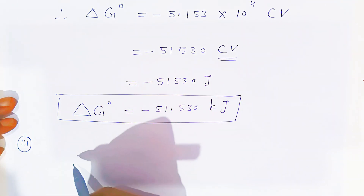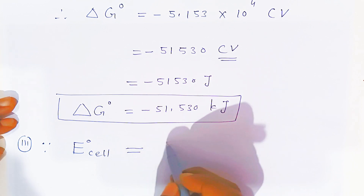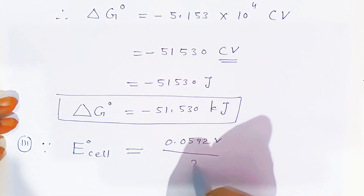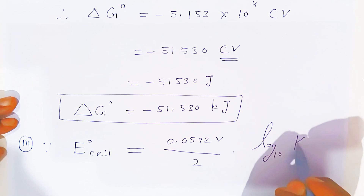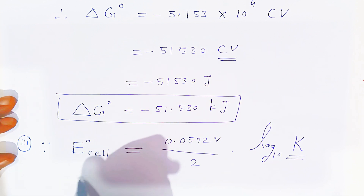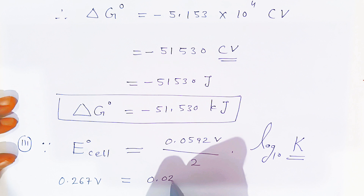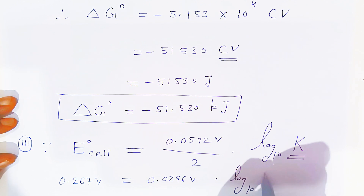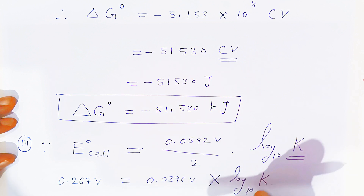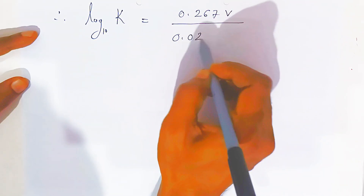For the third part, we calculate the equilibrium constant K. The formula is: E°cell equals (0.0592 volt divided by n) times log base 10 of K. Putting in the standard cell potential of 0.267 volt and n equals 2, we get 0.267 equals 0.0296 times log K. Therefore log K equals 0.267 divided by 0.0296.